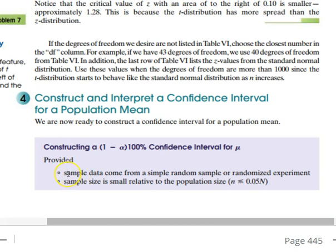The first one is that our sample data needs to come from a simple random sample. And the second is that our sample size needs to be relatively small compared to the population size, saying that our sample size is less than or equal to 5% of the population size.